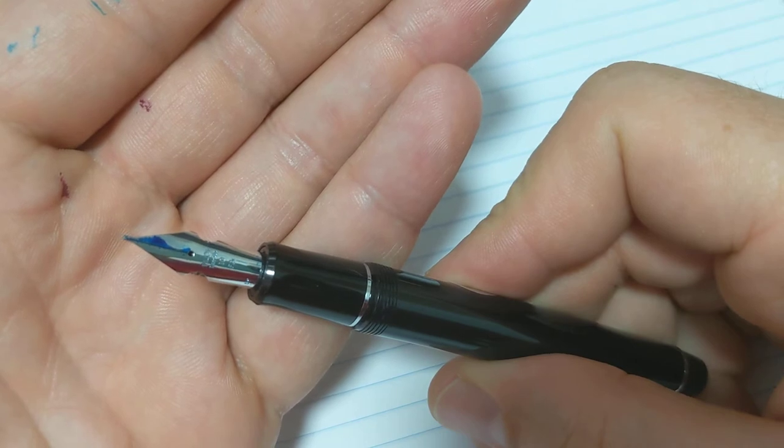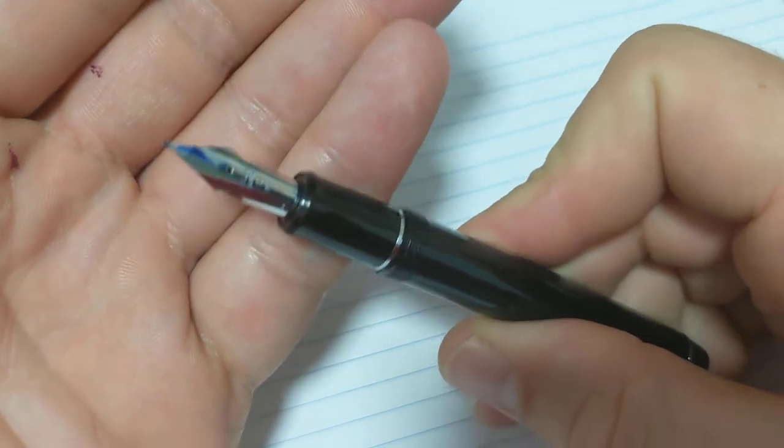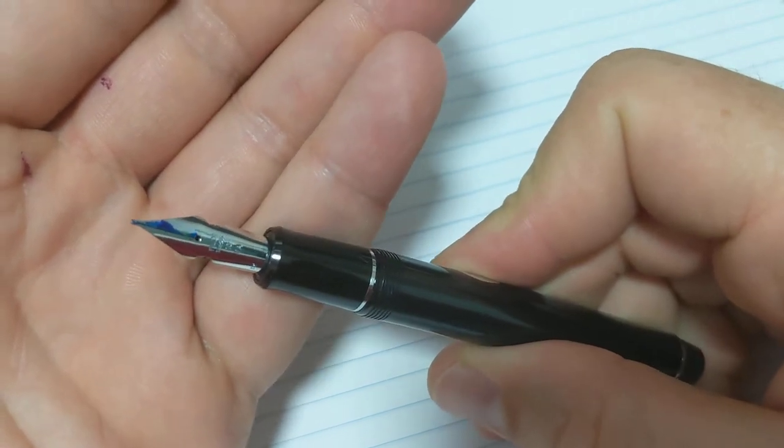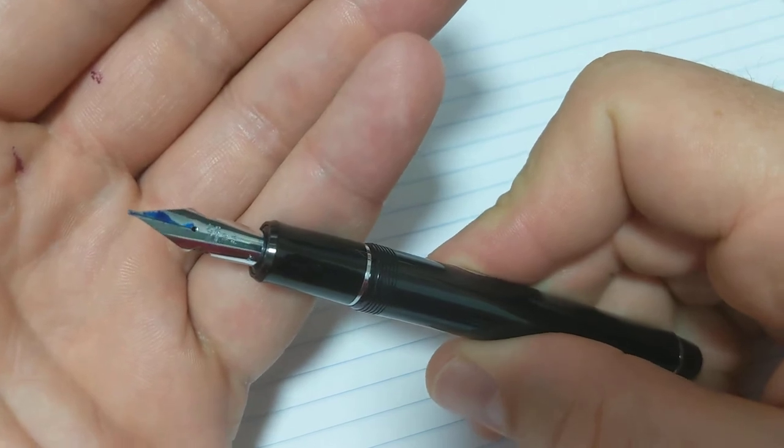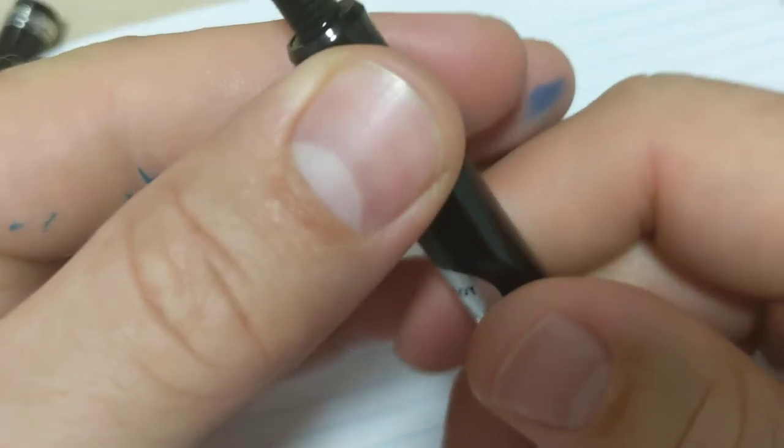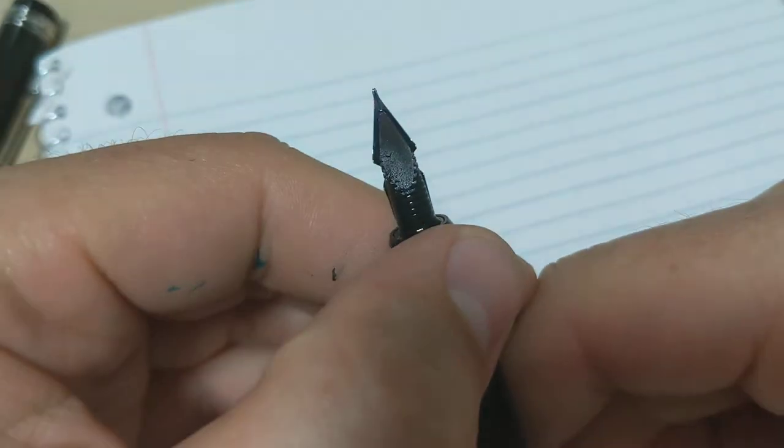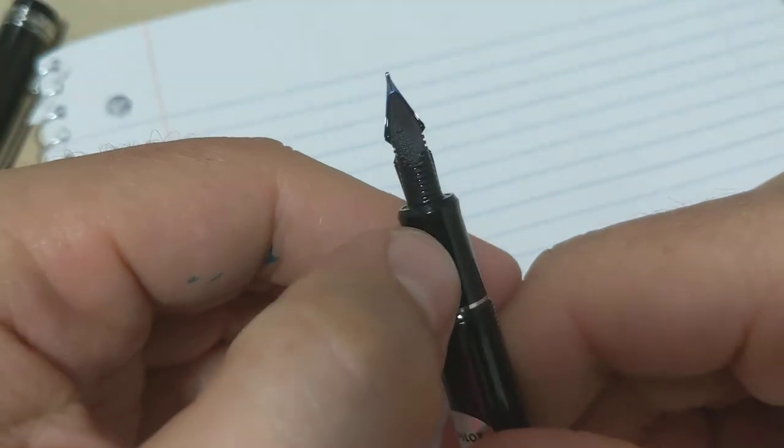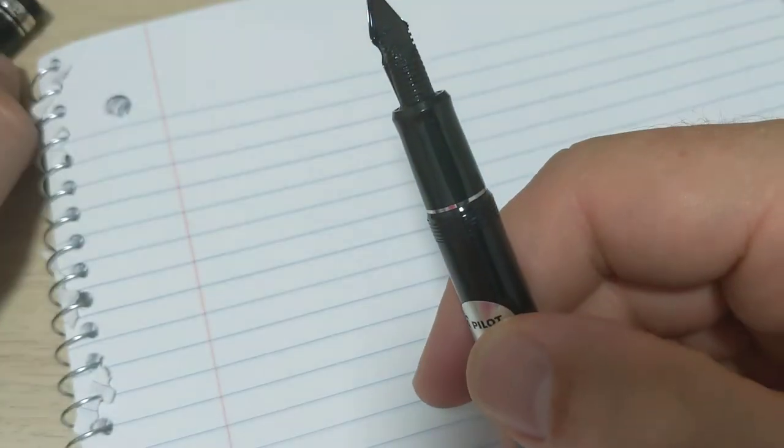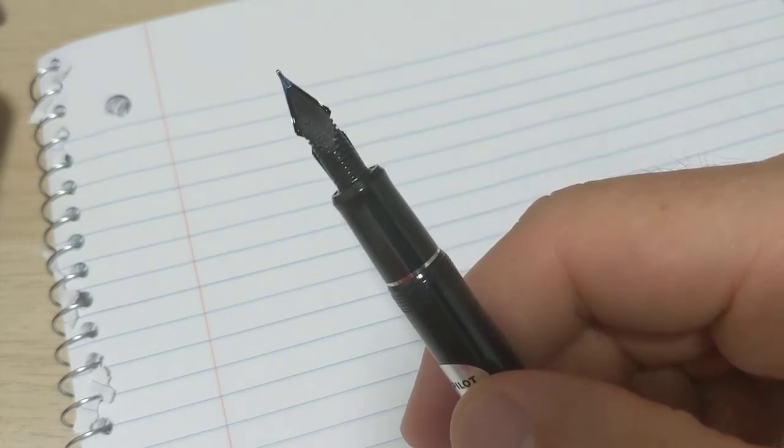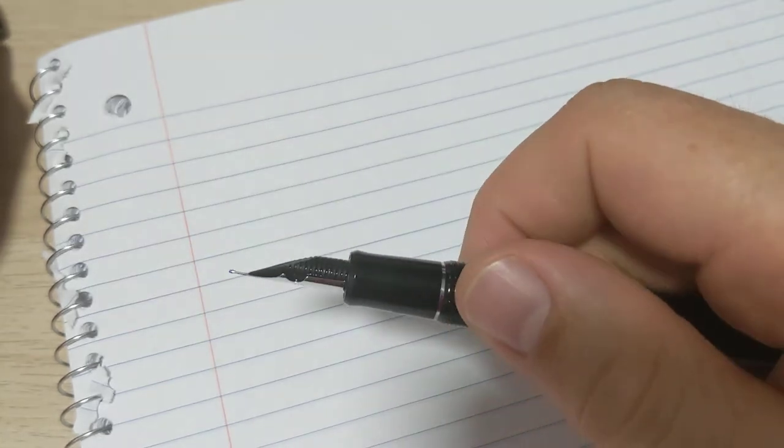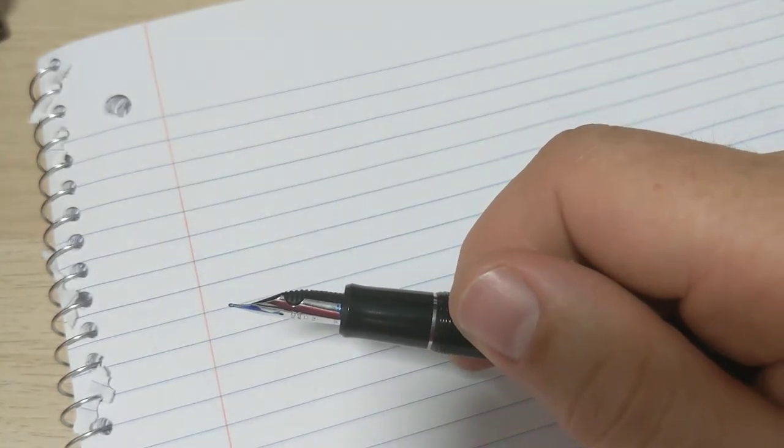So I knew I probably needed to adjust the feed, or sorry, replace the feed or get something done to it, just from all the stuff you can read online. So I went to an online retailer - I can't remember the name now, it's like Flex Feed Nib Company, something like that. I'll try to put a link in the description. But they make their own feeds for different nibs.